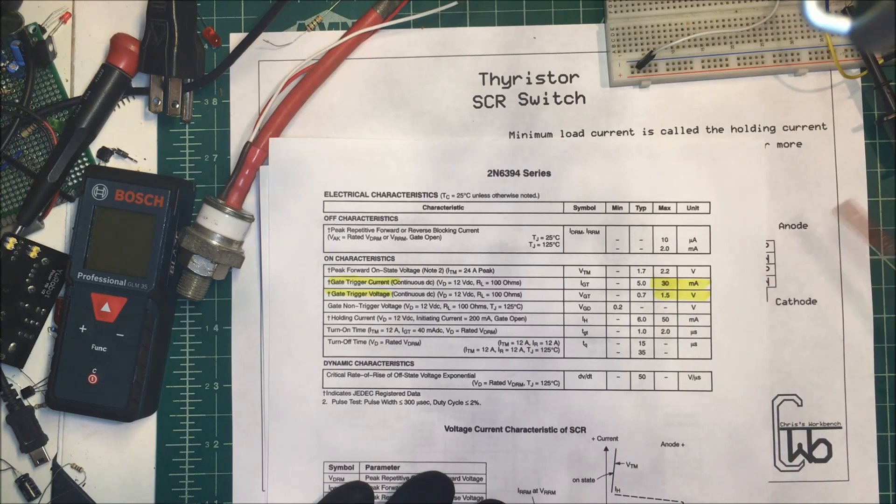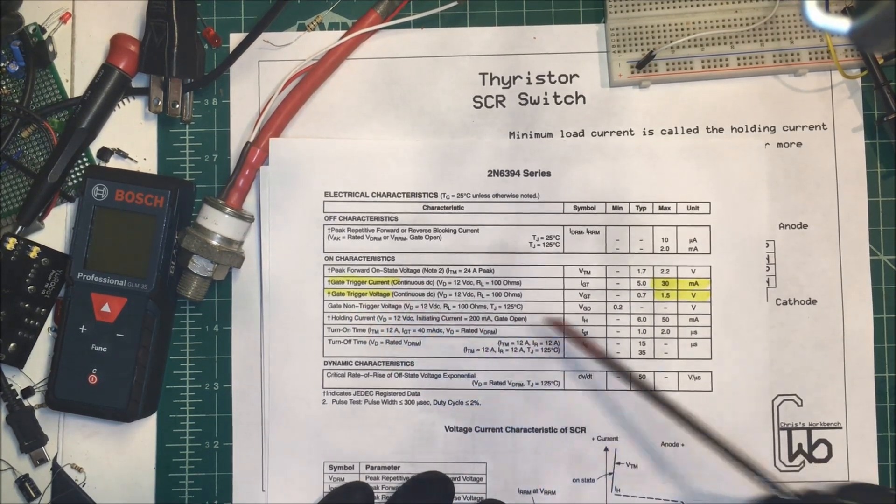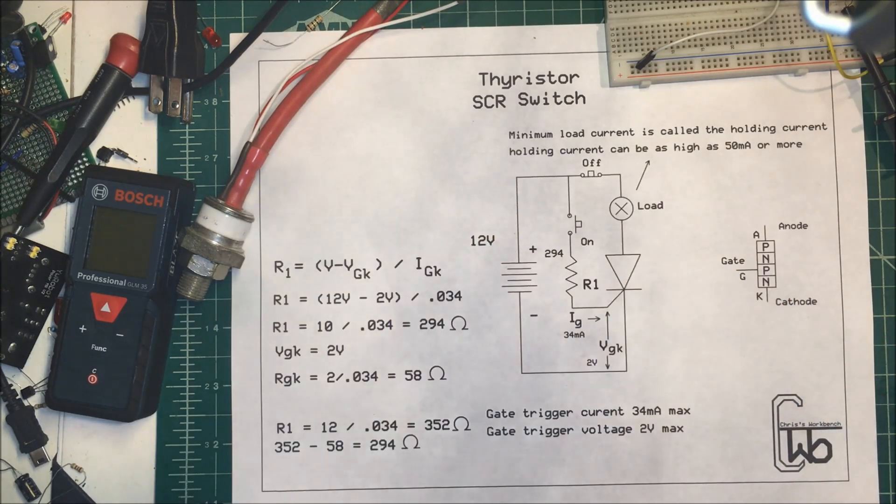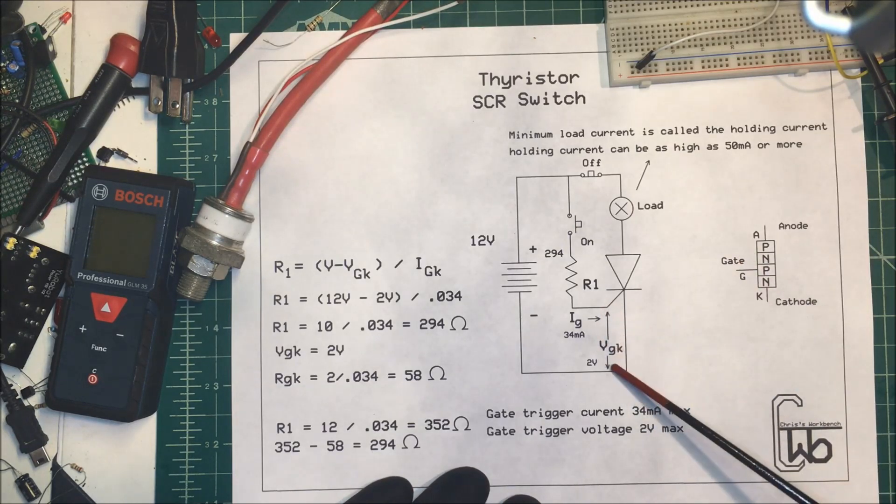This one I've tested happens to be 34 milliamps. And the gate trigger voltage is one and a half volts; this one happens to be about two volts. So if we figure we're going to drop two volts across the gate to cathode here.